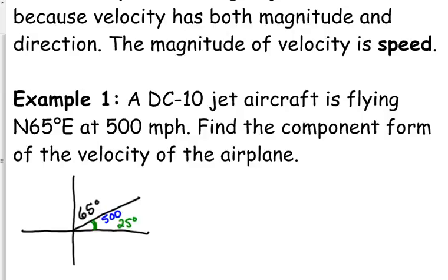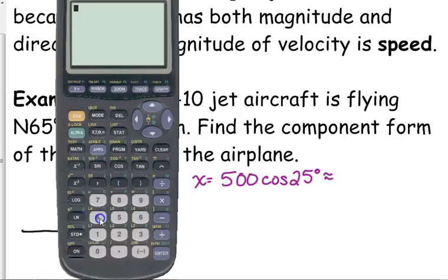So when we find our component form, the x-component is the magnitude, the speed, times the cosine of the angle. 500 cosine of 25. 453.154.